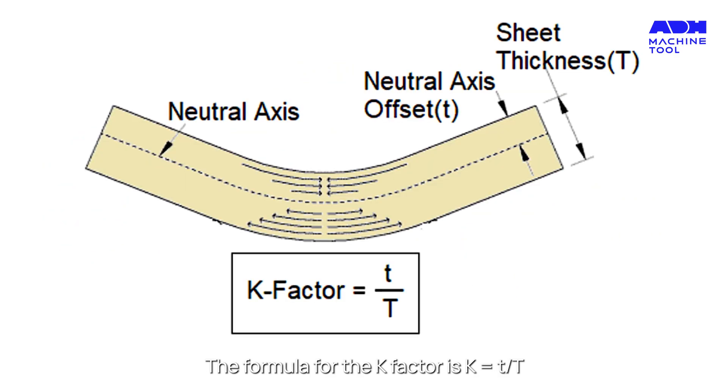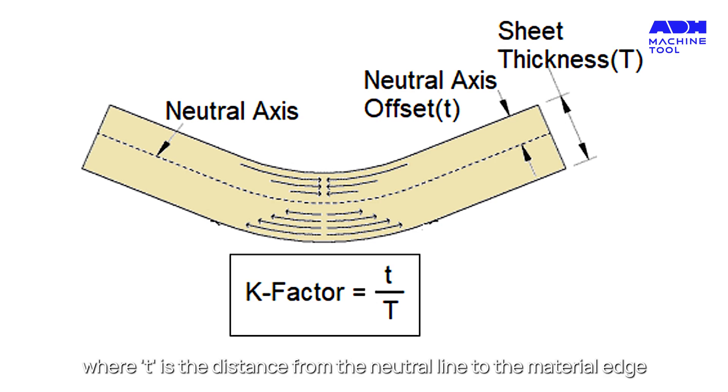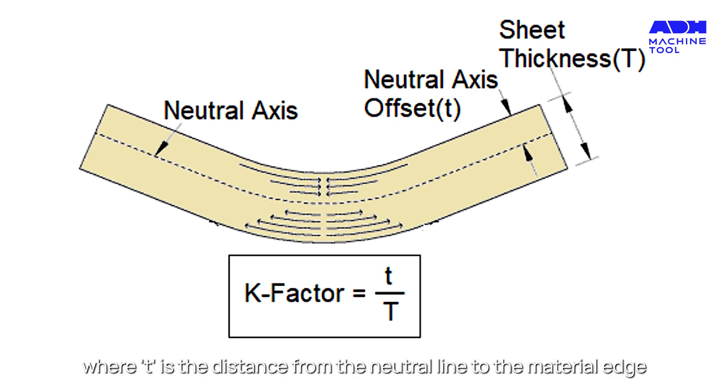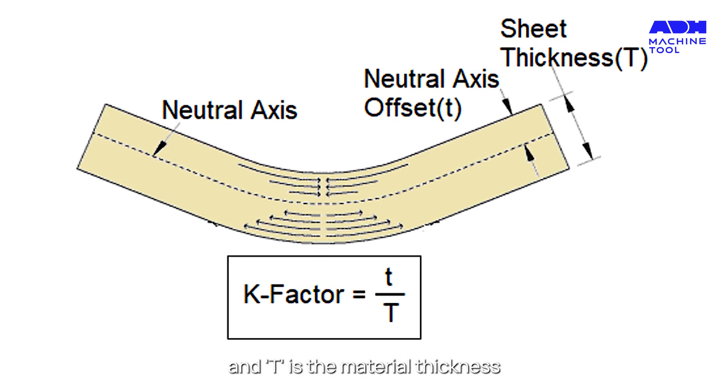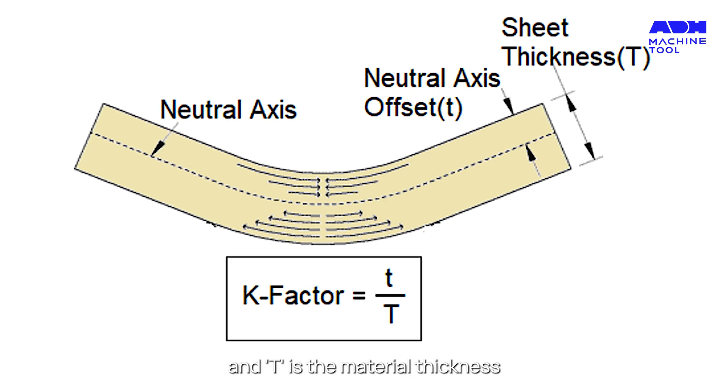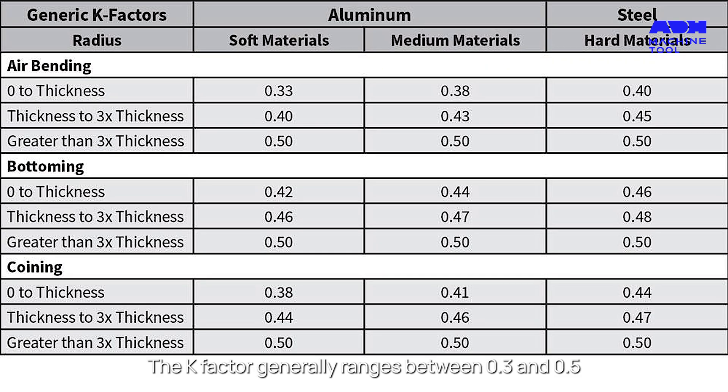The formula for the K factor is K equals R over T, where T is the distance from the neutral line to the material edge and T is the material thickness. The K factor generally ranges between 0.3 and 0.5.